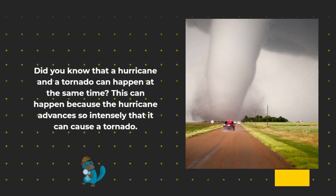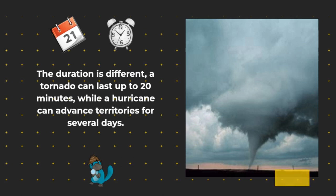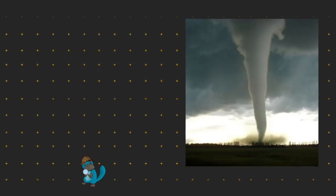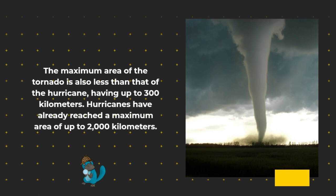Did you know that a hurricane and a tornado can happen at the same time? This can happen because the hurricane advances so intensely that it can cause a tornado. The duration is different: a tornado can last up to 20 minutes, while a hurricane can advance territories for several days. The maximum area of a tornado is also less than that of a hurricane, having up to 300 kilometers, while hurricanes have already reached a maximum area of up to 2,000 kilometers.